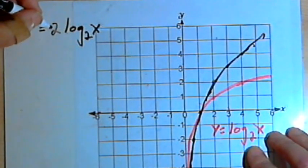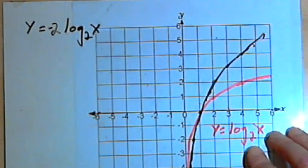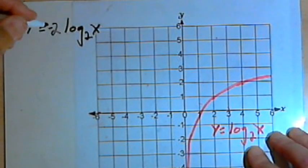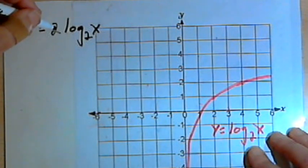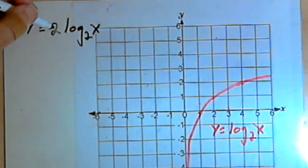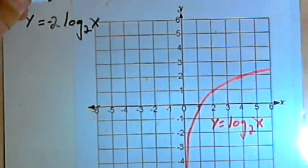If I put a negative sign in front of the coefficient, what that would do would be stretch the graph by that factor. If I have a negative 2 times log base 2 of x, it would stretch the graph by a factor of 2 and also flip it,